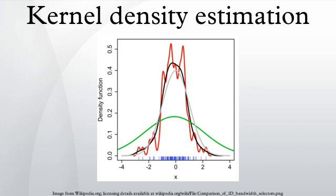Let x₁...xₙ be an independent and identically distributed sample drawn from some distribution with an unknown density f. We are interested in estimating the shape of this function f. Its kernel density estimator is f̂ₕ(x), where K is the kernel—a non-negative but not necessarily positive function that integrates to one—and h > 0 is a smoothing parameter called the bandwidth. A kernel with subscript h is called the scaled kernel and defined as Kₕ = (1/h)K(x/h).